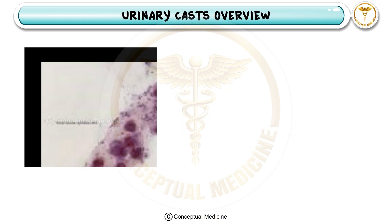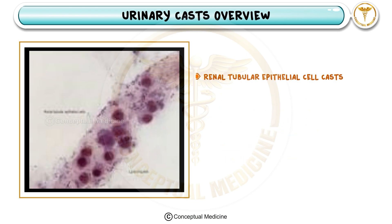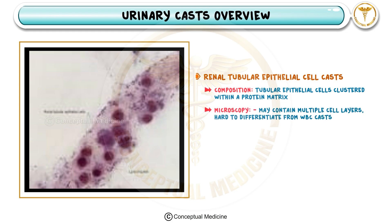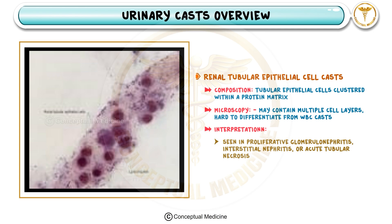Renal tubular epithelial cell casts form when the epithelial cells lining the tubules shed and become embedded in the cast. Under the microscope these can sometimes resemble white blood cell casts, but careful observation reveals their cellular structure. They are seen in conditions like proliferative glomerulonephritis, interstitial nephritis, and acute tubular necrosis, though they can also appear in healthy individuals, so clinical context is important.